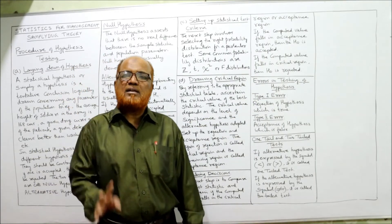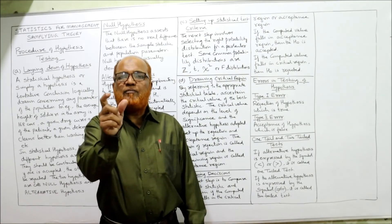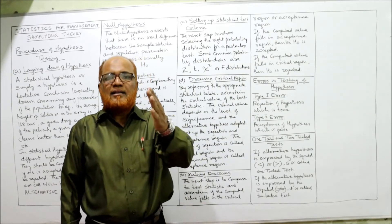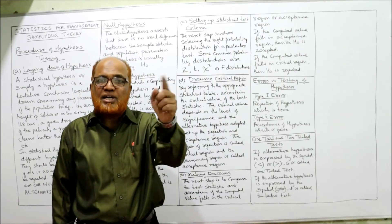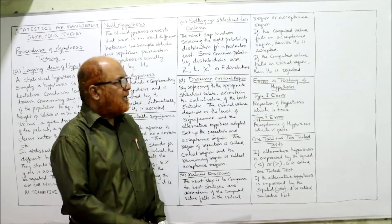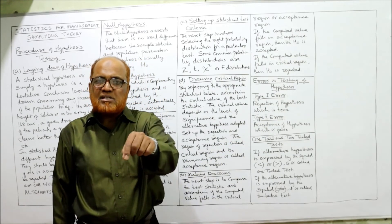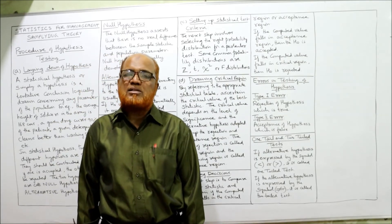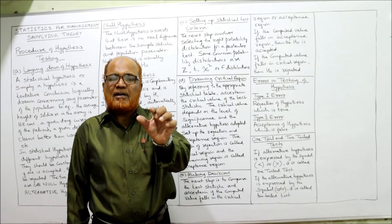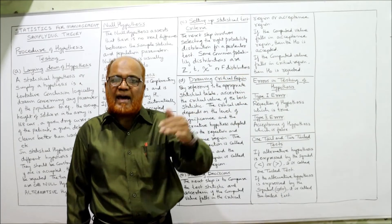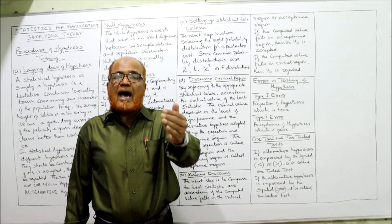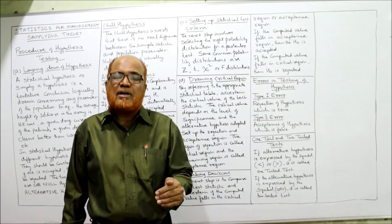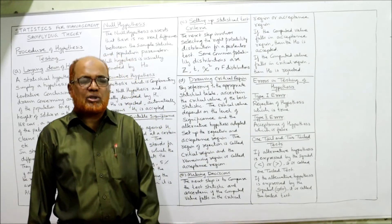There are two types of errors in hypothesis testing: Type 1 error and Type 2 error. Type 1 error is the error of rejecting the null hypothesis when it should have been accepted — by mistake the null hypothesis is rejected instead of being accepted. Type 2 error is the opposite: accepting the null hypothesis instead of rejecting it — when the null hypothesis should be rejected, by mistake it is accepted.